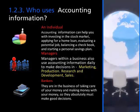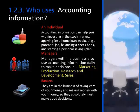Managers within a business also use accounting information daily. Some of the decisions they might make using accounting information include: marketing — which line of goods should the company emphasize; production — should the company produce goods at home or open a new plant abroad; research and development — how much money should be set aside for new product development; and sales — should the company expand the advertising budget. Without proper accounting information, these types of decisions would be very difficult if not impossible to make. Bankers also continually use accounting information, as it is fundamental to their decision-making process.